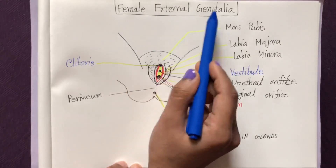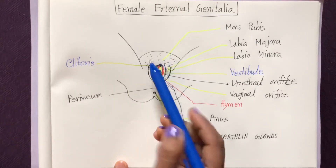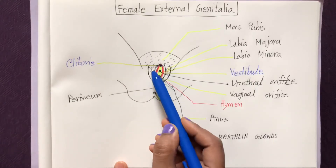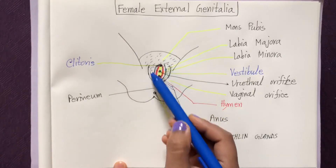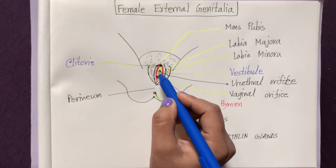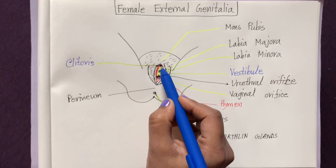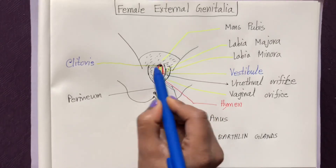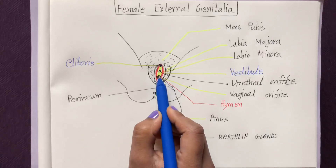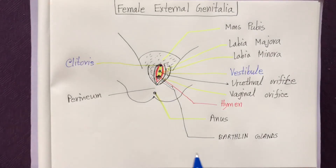To summarize the structure of female external genitalia: mons pubis is a cushion of fatty tissue covered by skin and pubic hair. Just below it are the labia majora — fleshy folds of tissue covering around the vaginal orifice. Then the labia minora — paired folds of tissue just under the labia majora. At the upper junction of the labia minora is the clitoris. Then the urethral orifice, followed by the vaginal orifice — partially covered by the hymen. On either side of the vaginal orifice are Bartholin's glands.